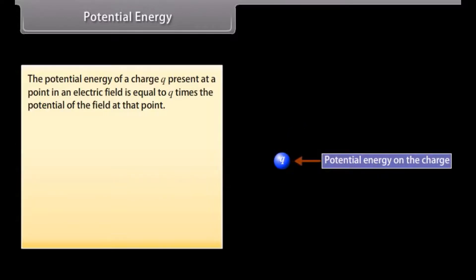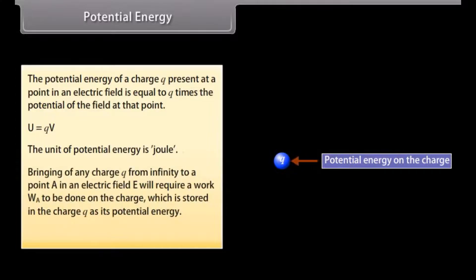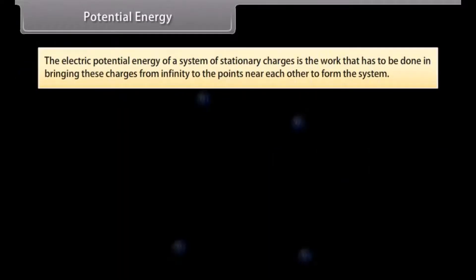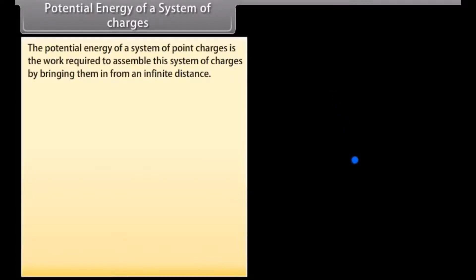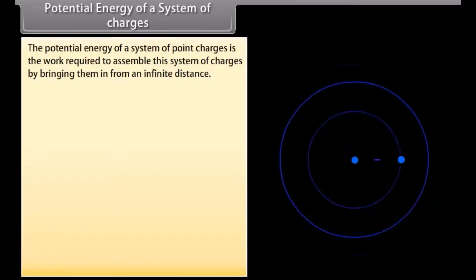Potential energy: The potential energy of a charge Q present at a point in an electric field is equal to Q times the potential of the field at that point: U equals QV. The unit of potential energy is joule. Bringing any charge Q from infinity to a point A in an electric field requires work WA to be done, which is stored as potential energy: UA equals QVA. The electric potential energy of a system of stationary charges is the work that has to be done in bringing these charges from infinity to the points near each other to form the system.